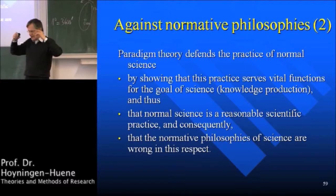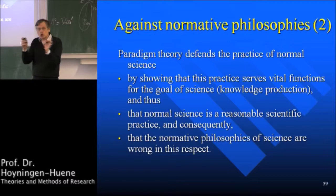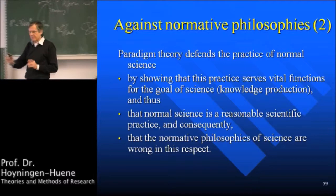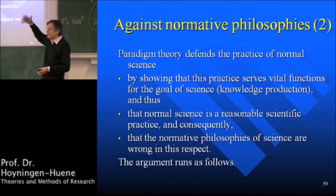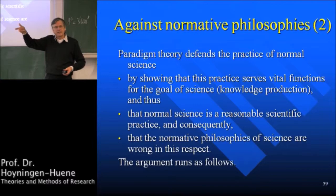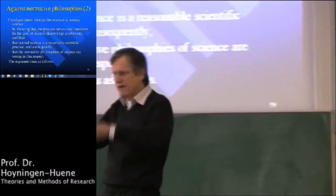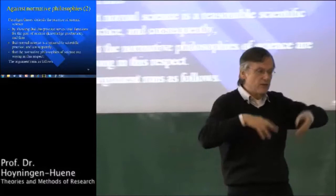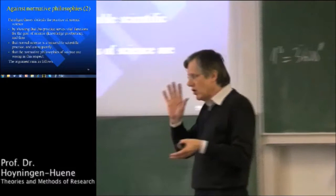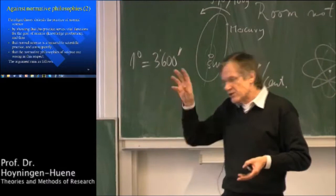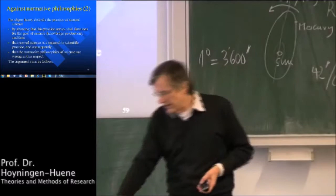Paradigm theory says: look, normal science serves the goal of science — namely, it produces wonderful knowledge — and that normal science is a reasonable scientific practice, and consequently the normative philosophies of science are wrong in this respect. That's the strategy paradigm theory develops. It says normal science serves vital functions, it's a reasonable practice, and consequently the normative philosophies that say normal science is bad must be wrong.